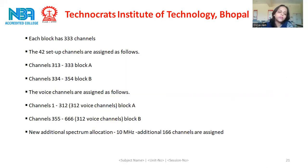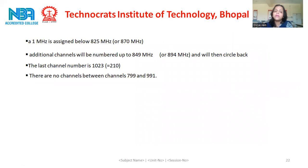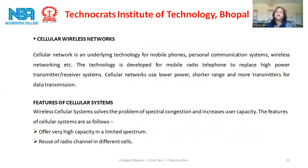The voice channels are assigned as follows: channels 1 to 312 in block A and channels 355 to 666 in block B. For new additional spectrum allocation of 10 MHz, an additional 166 channels are assigned. 1 MHz is assigned below 825 MHz or 870 MHz. Additional channels will be numbered up to 849 MHz or 894 MHz and will then circle back. The last channel number is 1023 or 210. There are no channels between channels 799 and 991.